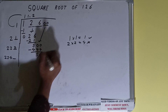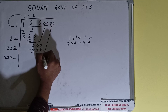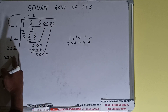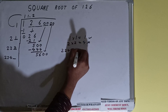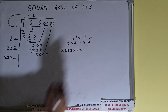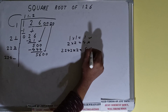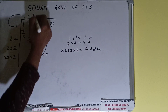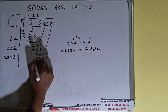Bring one more pair of zeros down — it will become 5600. We can try two times: 2242 times two gives 4484, which is all right to take. So two here and two here — 4484, subtract.